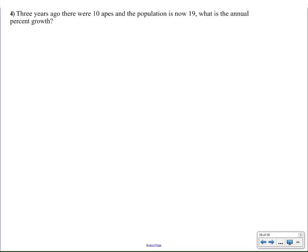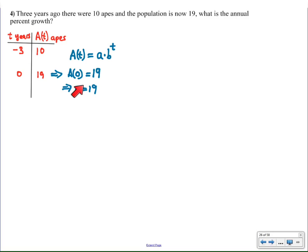Now, this problem seems vastly different because we're talking about apes three years ago versus apes now, rather than this year and next year, or this month and next month. But the format is the same if we utilize exponential growth. So I know my exponential growth curve, and I know the standard format for exponential growth, and I know that A(0) equals 19, which tells me my little a value is 19.